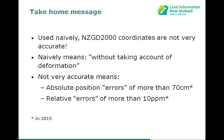If you take nothing else from this session, take this: used naively, NZGD2000 coordinates are not very accurate. 'Naively' in this case means without taking account of deformation, and 'not very accurate' means absolute position errors of more than 70 centimetres and relative errors of more than 10 parts per million potentially.